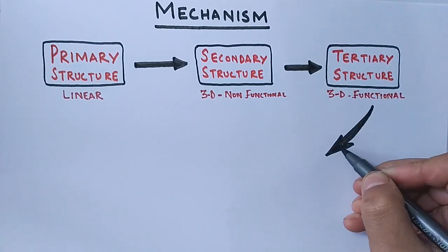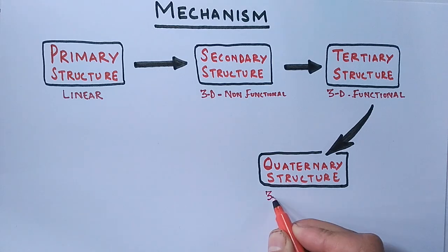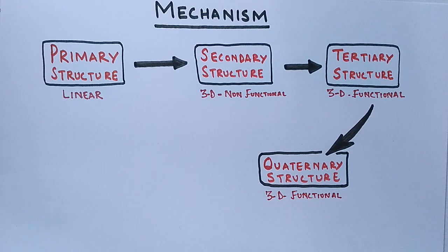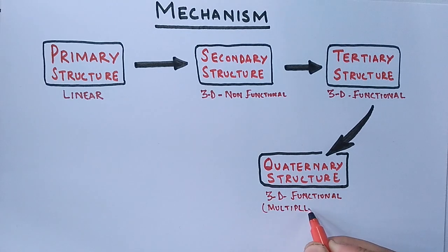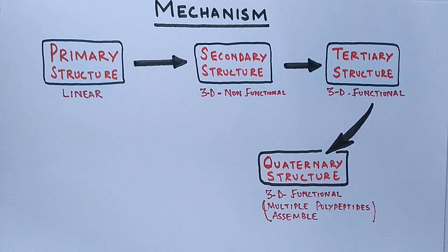In some cases, from the tertiary structure we get the quaternary structure, which is also a 3D functional form of the protein. It differs from tertiary structure in that it is an assembly of multiple tertiary structures. Most proteins stabilize at the tertiary structure, but some go through the quaternary stage to form a more complex protein.